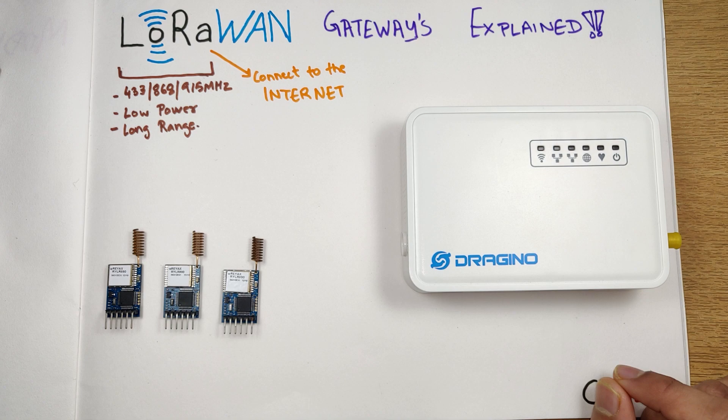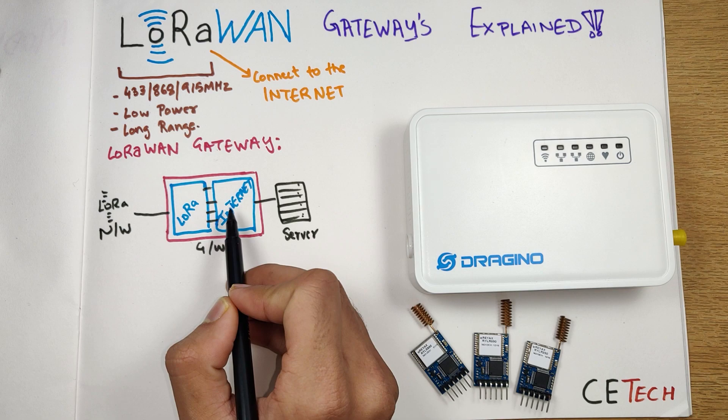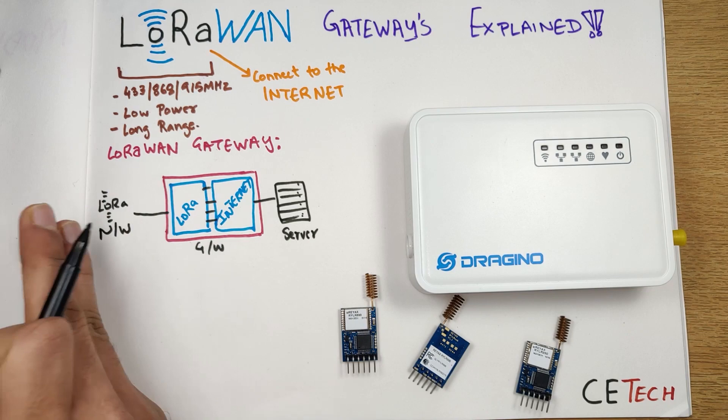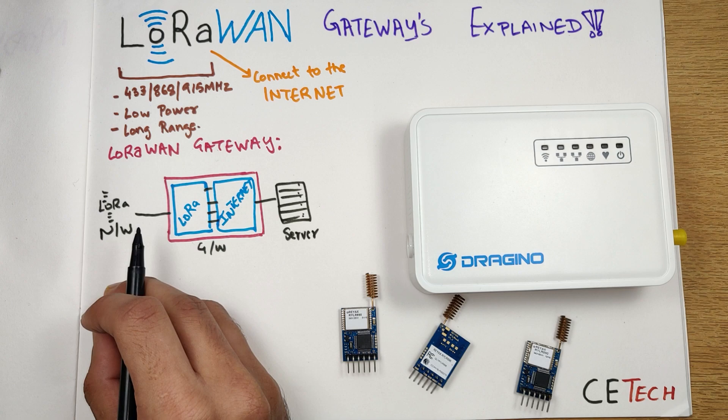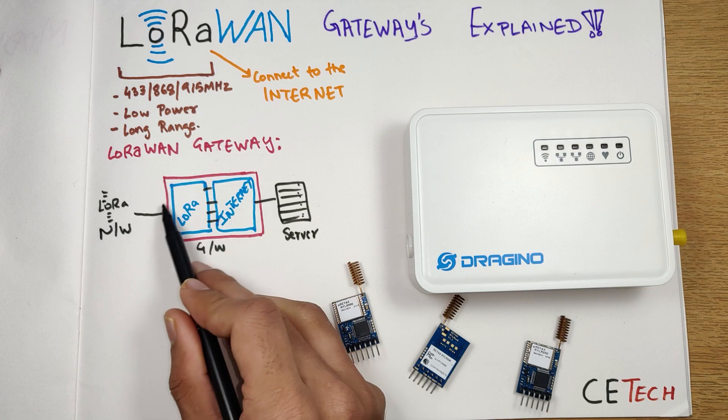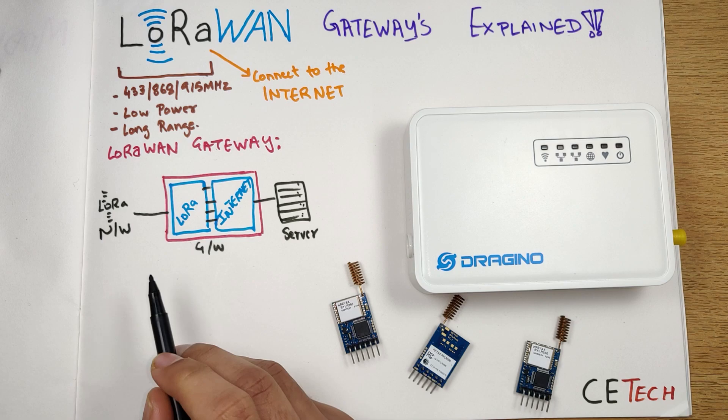This is where a LoRa-based gateway comes into play. A LoRa gateway consists of two types of hardware: one is a LoRa-based chip, and the other is an internet-providing chip. The LoRa-based chip interfaces with other LoRa-based devices and collects information from the LoRa network, then transmits it to the internet-based chip, which is connected to the internet and can transfer the data from the LoRa chip to the server.